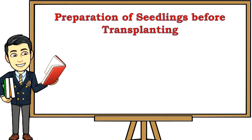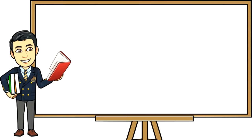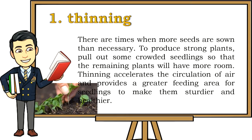Preparation of seedlings before transplanting: mortality is high during transplanting if seedlings are not given proper care. To ensure a higher rate of survival, three processes are needed — thinning, pricking, and hardening. First, thinning: when more seeds are sown than necessary, pull out some crowded seedlings so the remaining plants have more room. Thinning accelerates air circulation and provides a greater feeding area, making seedlings sturdier and healthier.